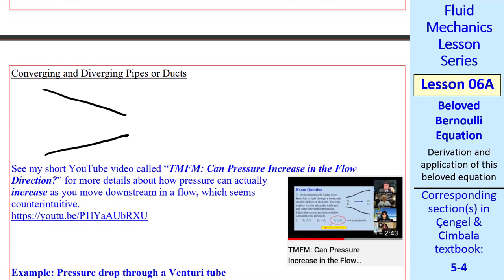Let's look at converging and diverging pipes or ducts. Suppose we have a converging duct with flow from left to right. As we go through this converging duct, speed must increase to conserve mass. Therefore, pressure must decrease.